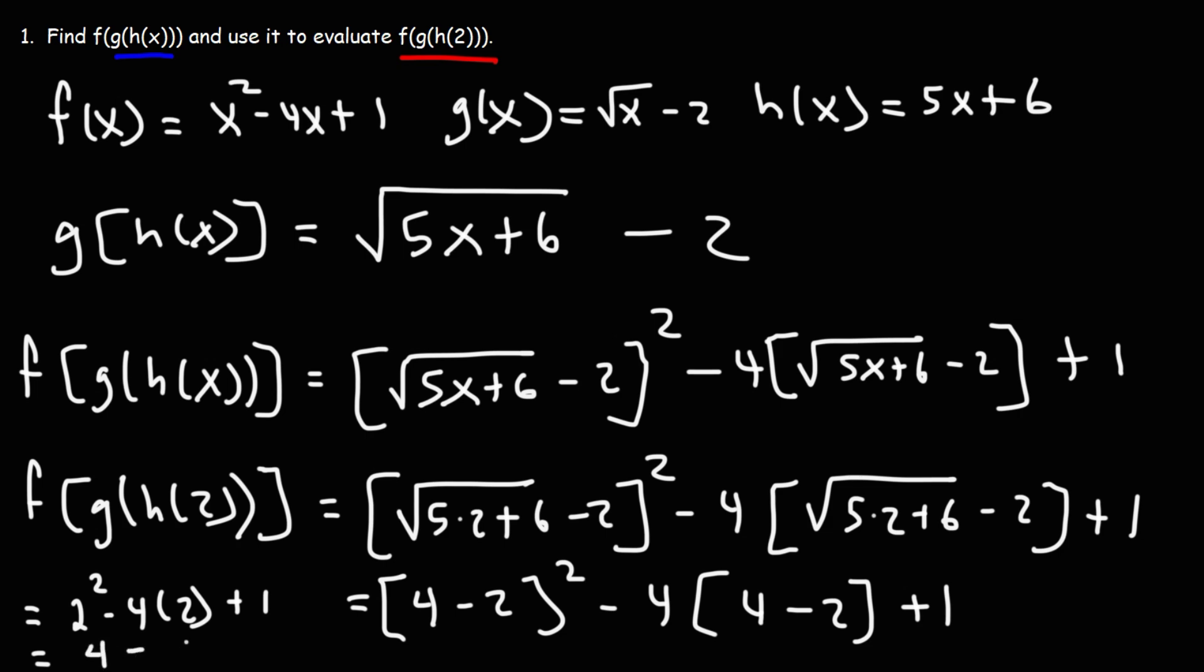2 squared is 4. 4 minus 2 is 8. I mean, 4 times 2 is 8. Now, 4 minus 8 is negative 4 plus 1. This gives us negative 3.